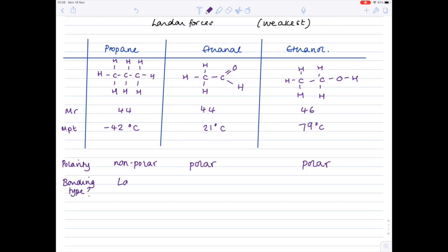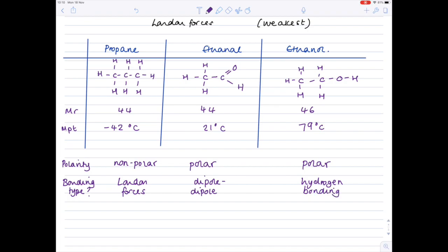Well, propane only has London forces, which remember I taught you was the weakest of all the intermolecular forces. Ethanol is a dipole-dipole molecule due to a permanent separation in the charges. And then lastly, looking at ethanol, not only have we got a polar molecule, but because we've got hydrogen being bonded to that highly electronegative element oxygen, then it means we have hydrogen bonding, which is the strongest of the three intermolecular forces.